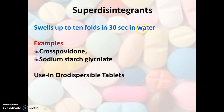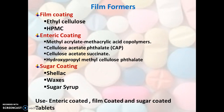Super disintegrants are special or optional excipients that swell up to 10 times in 30 seconds in water. Examples of super disintegrants are crospovidone and sodium starch glycolate. Super disintegrants are used in orally disintegrating tablets or wherever quick disintegration is desired.